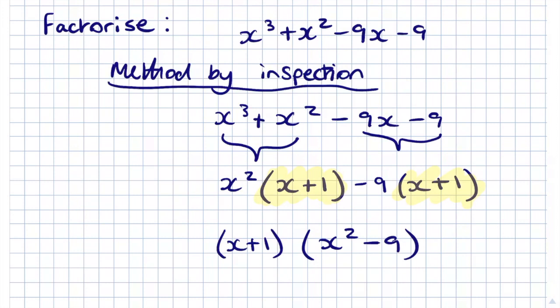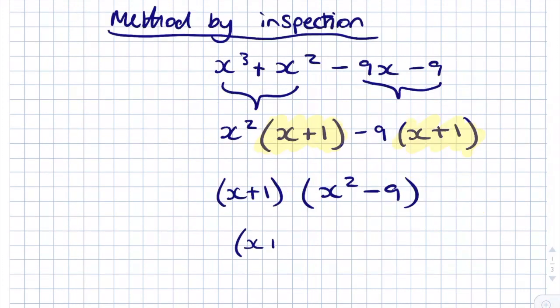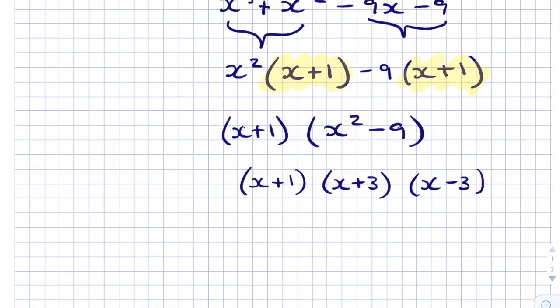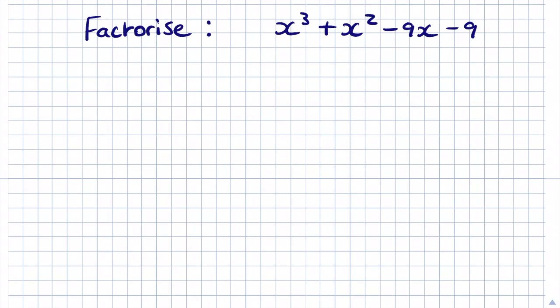Now x² - 9 is the difference of two squares. So we can write this as (x + 1)(x + 3)(x - 3). If we solve this equation, the solutions of x are: x = -1, or x = -3, or x = 3.